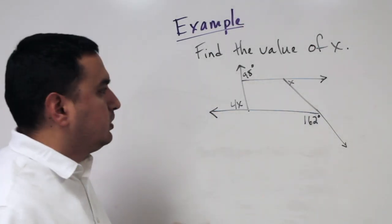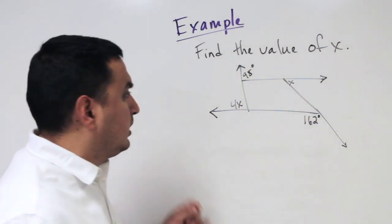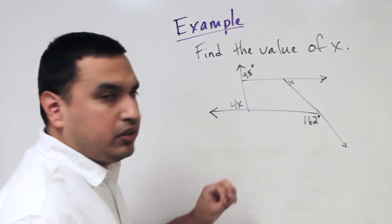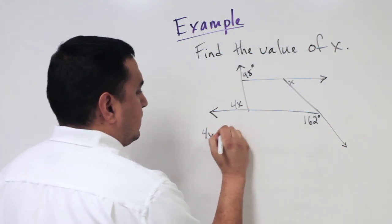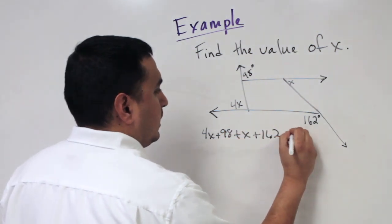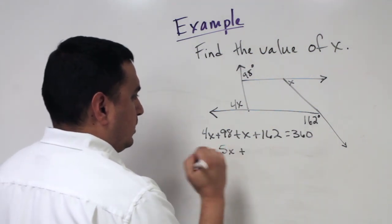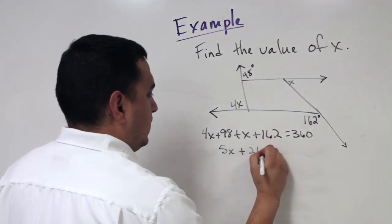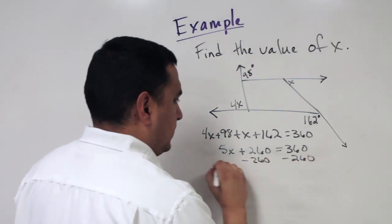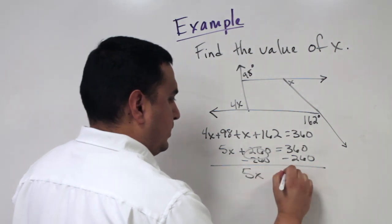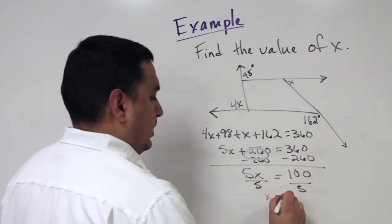Find the value of x, where the given angles are all exterior angles of a polygon. Since the sum of exterior angles is 360°, set up: 4x plus 98 plus x plus 162 equals 360. Combining like terms gives 5x plus 260 equals 360. Subtract 260 from both sides: 5x equals 100. Divide by 5: x equals 20.